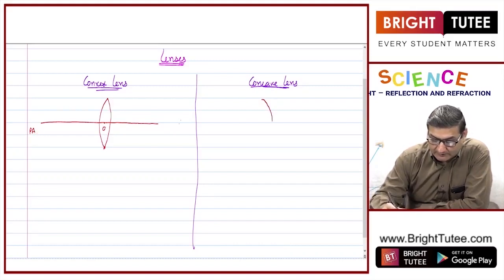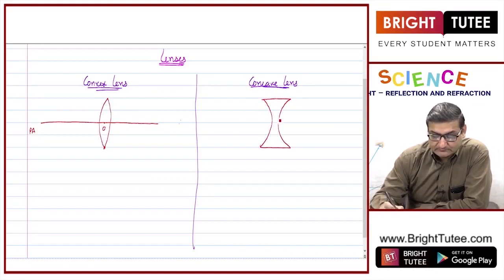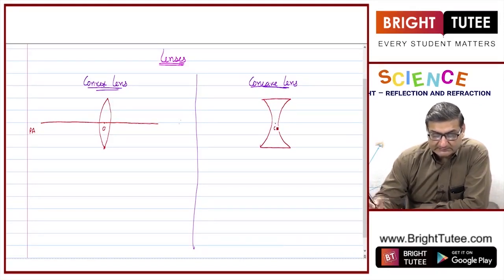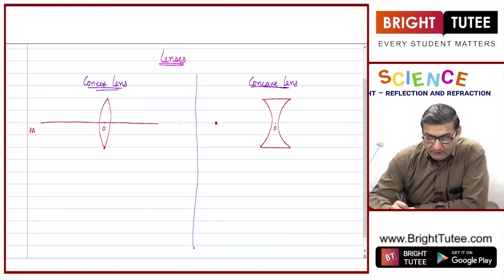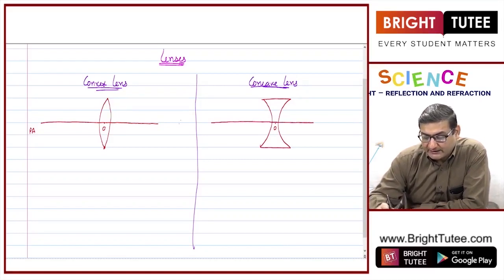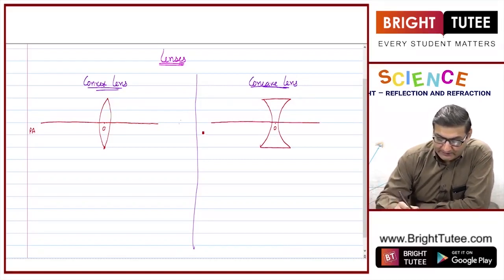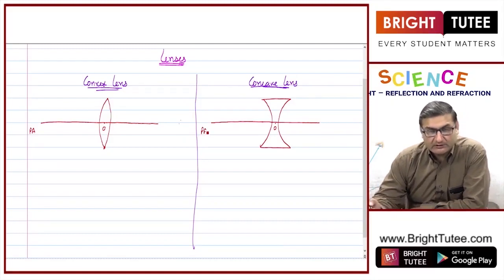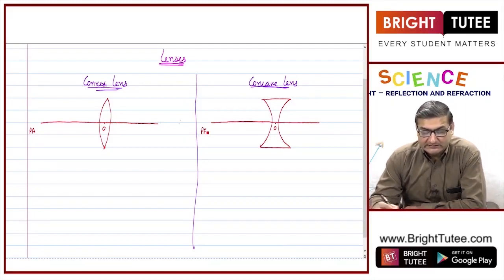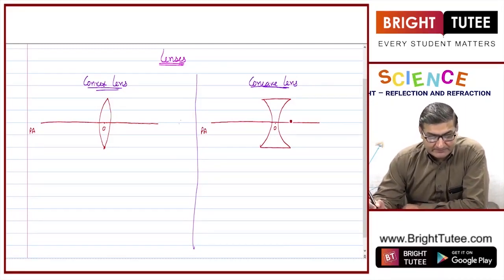When I am talking about the concave lens, this is my concave lens. This is the optical center, represented by O, and this is the principal axis — the line joining the optical center of the lens.